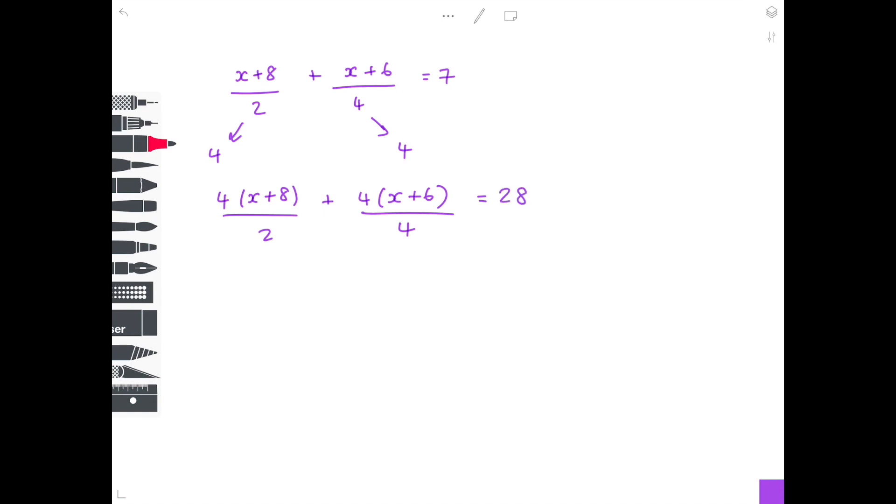Let's do some canceling down. That just cancels out. Multiply out your brackets to get 2x plus 16 plus x plus 6 equals 28. Collect together your x terms to get 3x. What's 16 plus 6? It's 22. That equals 28. To get the x's by itself, you want to take away 22 from both sides. To get 6. And then finally divide by 3 on both sides to get x equals 2 as your final answer.